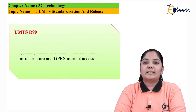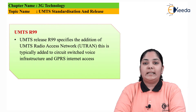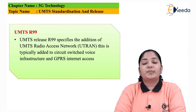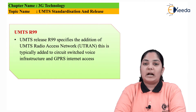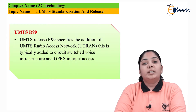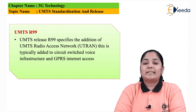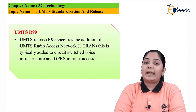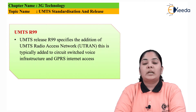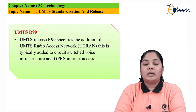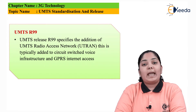The first release, UMTS-99 or R99, was used for the addition of a network called the UTRAN, which stands for UMTS Radio Access Network. This network was basically added on to the circuit-switched network and the GPRS architecture for enhanced data rates. The additional elements added for the UTRAN were the RNC, which is the Radio Network Controller, and the Node B.